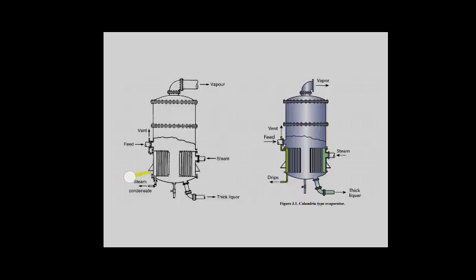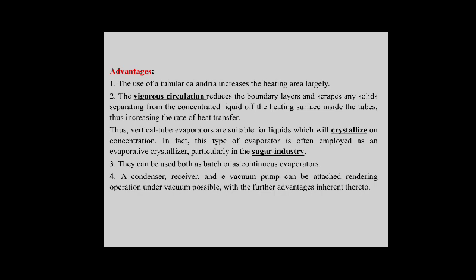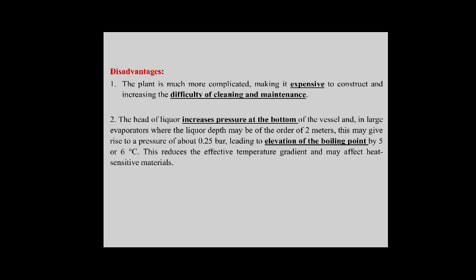The short tube (vertical tube) evaporator uses a tubular calandria which increases the heating area largely. Vigorous circulation reduces the boundary layer and scrapes any solids separating from the concentrated liquid. Thus vertical tube evaporators are suitable for liquids that will crystallize on concentration and are used in the sugar industry. They can be used as batch or continuous evaporators and may be fitted with a condenser, receiver, and vacuum pump. Disadvantages: the plant is much more complicated, making it expensive and difficult to clean and maintain. The hydrostatic head of liquor increases pressure at the bottom, causing elevation of boiling point, which may lead to serious problems.